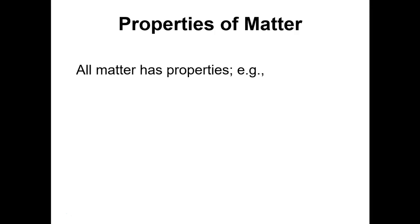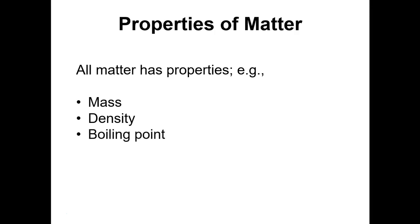With regard to properties of matter, all matter — whether it's pure, a mixture, or anything — has certain properties, and we can look at various examples of those. Matter is defined as having mass, so mass is a property of matter. Density, which is defined as mass per unit volume, is also a property of matter.